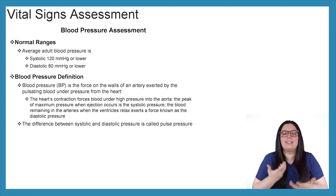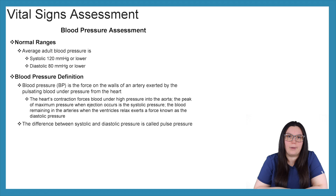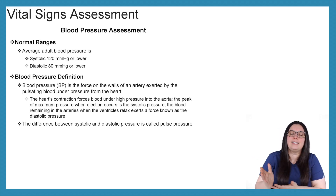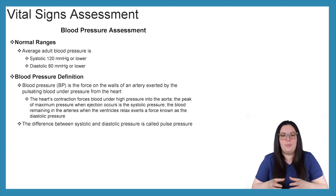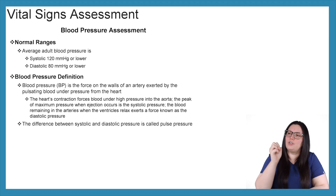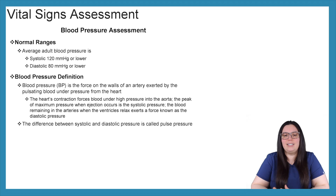What exactly does that mean? The heart's contraction forces blood under high pressure into the aorta. The peak of maximum pressure when that ejection is taking place is known as our systolic pressure. The blood remaining in the arteries when the ventricles relax — after we push all that out and relax — that force is known as diastolic pressure. That's how we get our two numbers. The difference between systolic and diastolic pressure is also known as our pulse pressure.